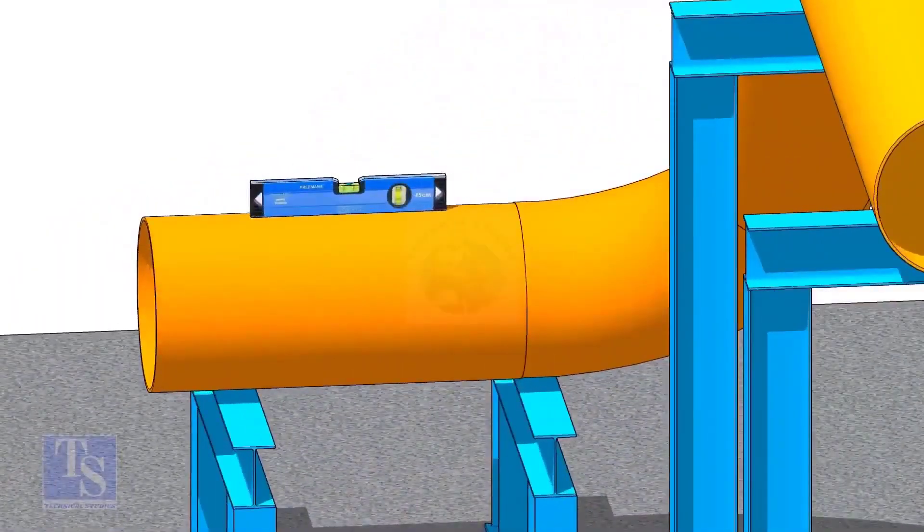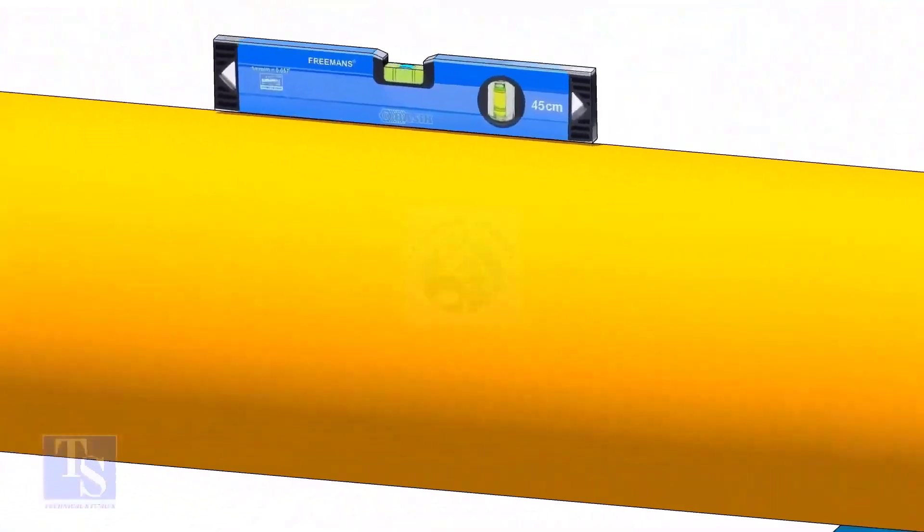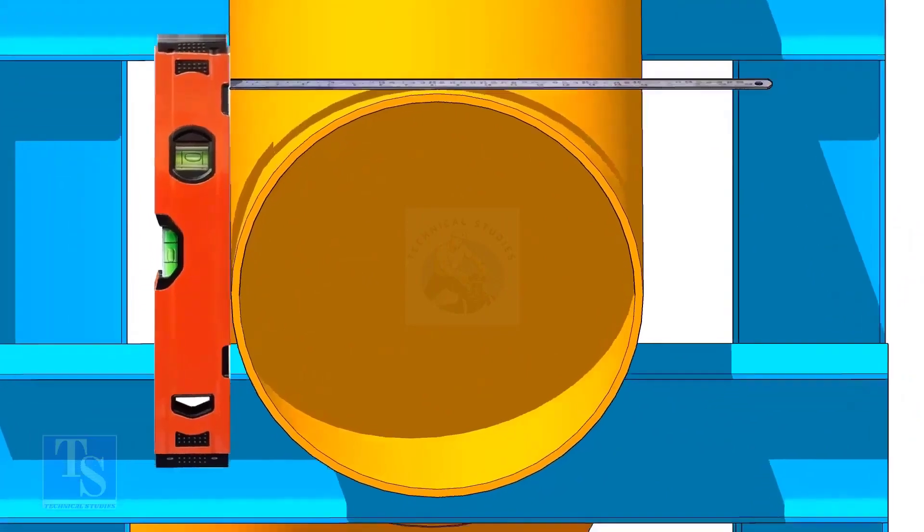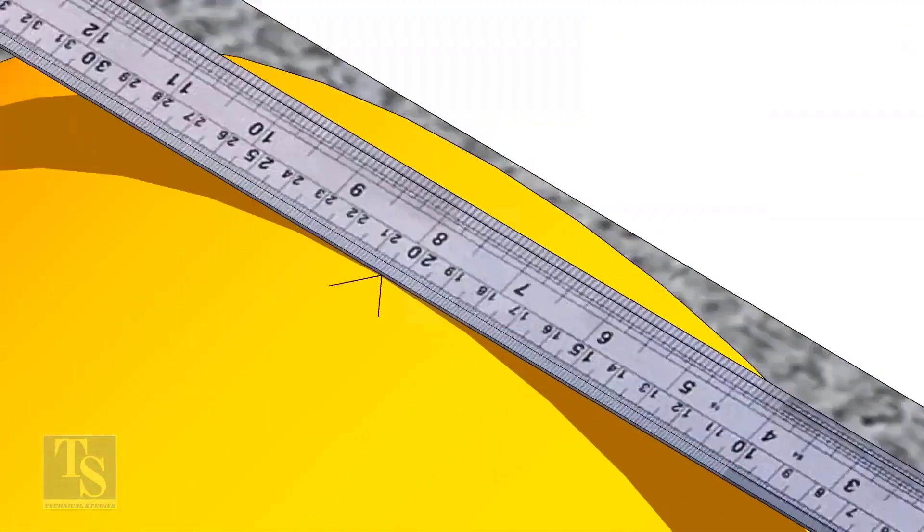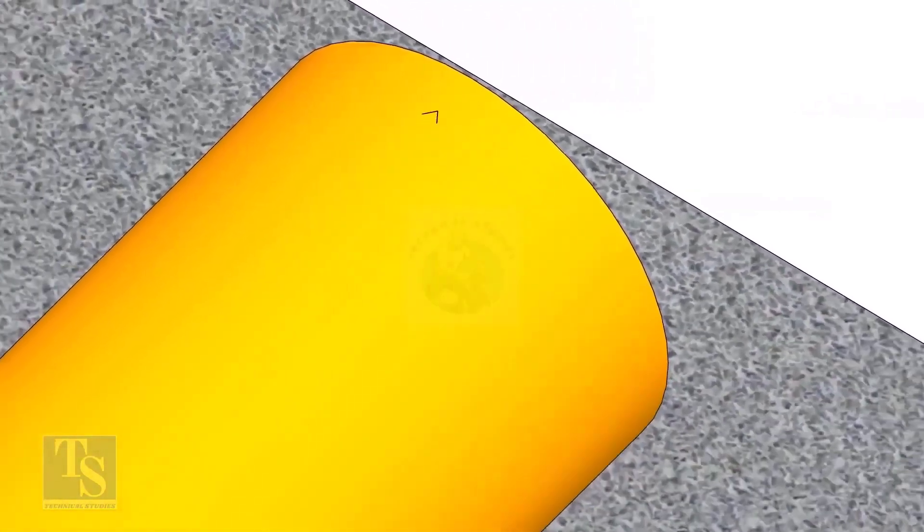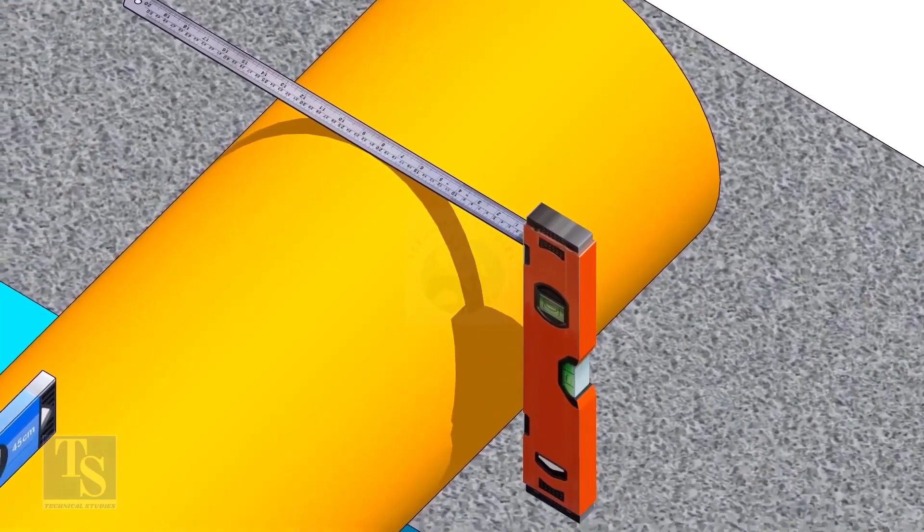After leveling the pipe, mark the center line. Don't forget to punch mark this line. Mark half OD at 300mm apart. This pipe OD is 406mm, so mark 203mm from the vertical level bottle on the top of the pipe and draw a line connecting these marks.